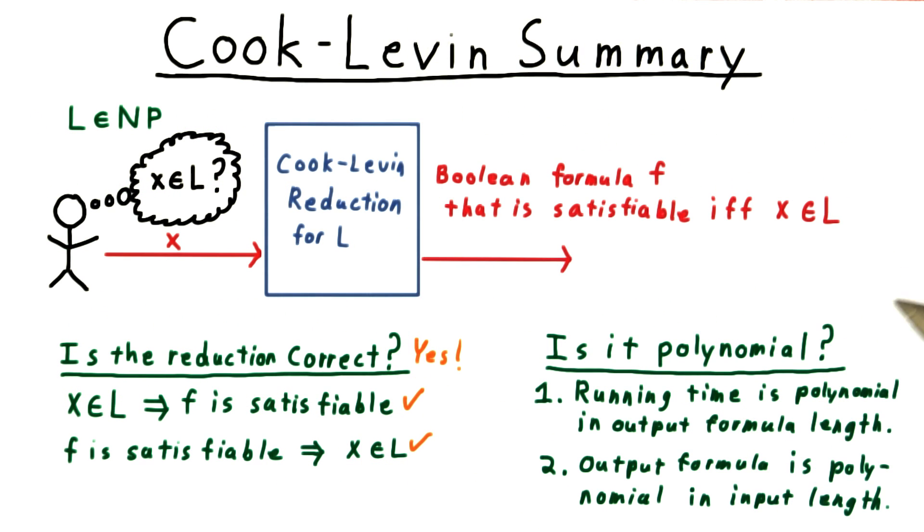Summing the length of all those clauses up together, we have a sum of polynomials, which is, of course, a polynomial. So yes, the overall reduction is a polynomial, and Cook's theorem is proved.